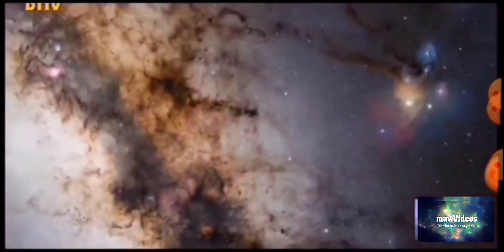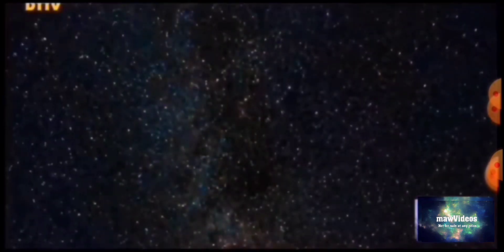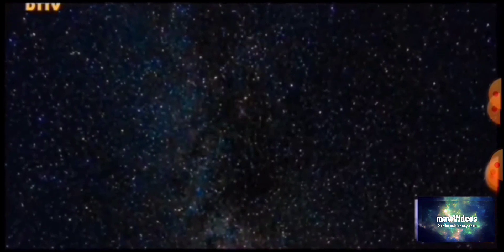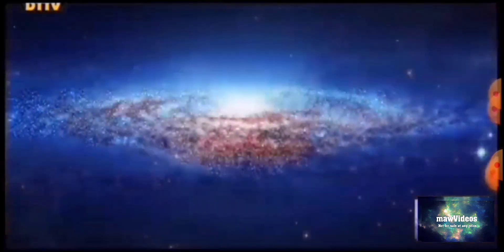The sun and you and me and all the stars that we can see are moving at a million miles a day, in an outer spiral arm at 40,000 miles an hour, of the galaxy we call the Milky Way.